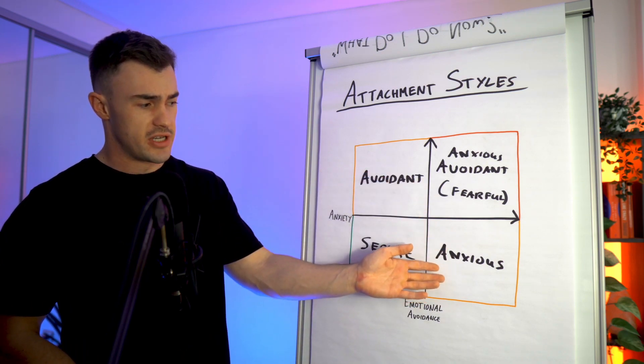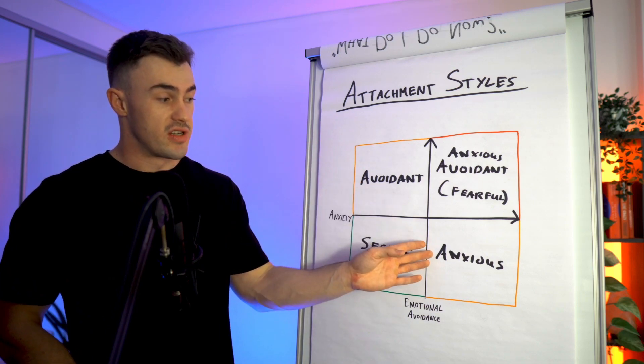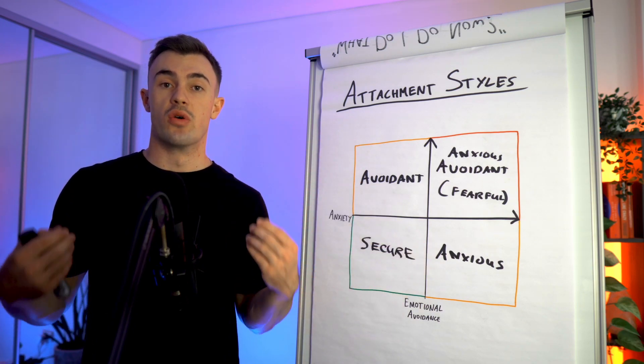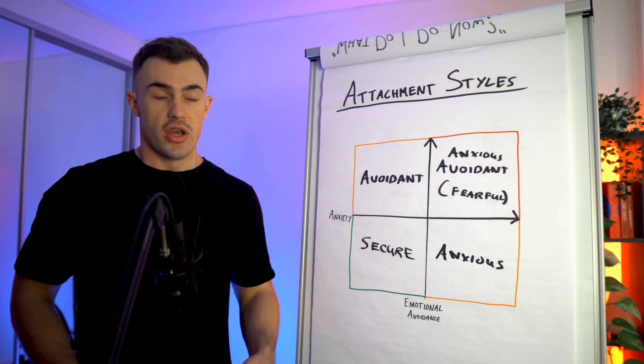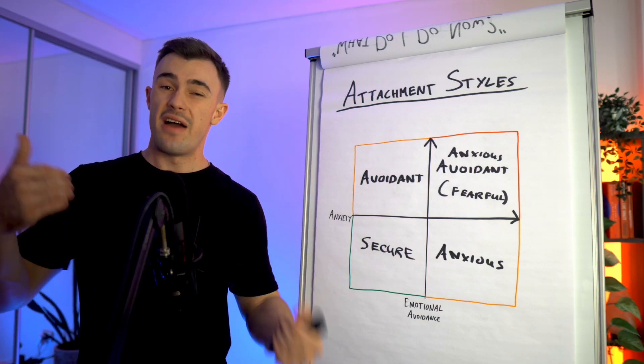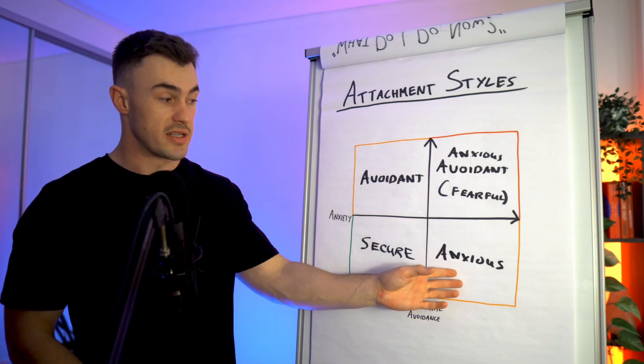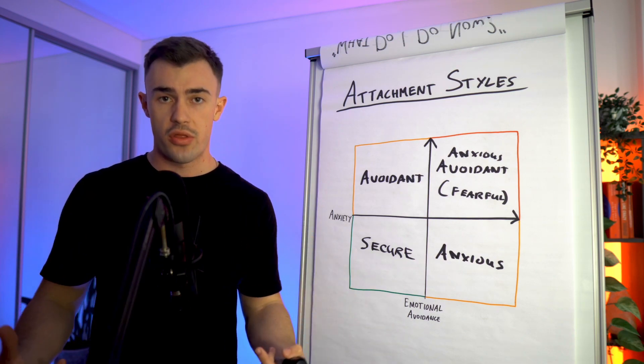Now, how do you overcome these different attachment styles? The solutions are a bit different for each of them. If you are an anxious type, you need to start to develop your self-confidence and self-assuredness. You need to start to do things that prioritize your own needs and have healthy boundaries so that you don't get taken advantage of by either of these two types and ultimately start to develop your own self-worth.